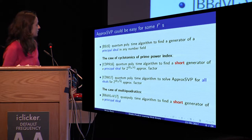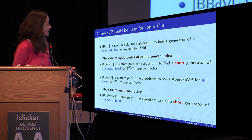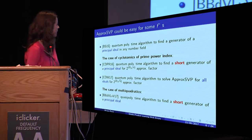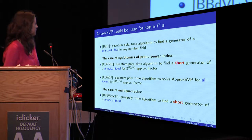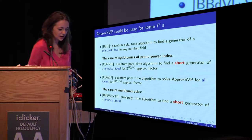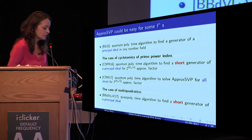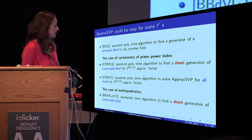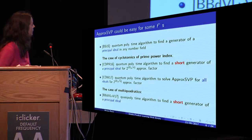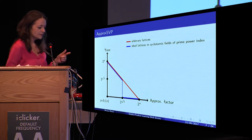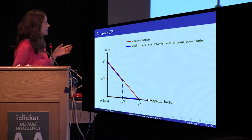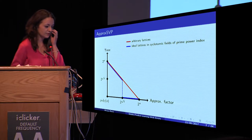Later on, they showed that we can solve approximate SVP for all ideals, not necessarily principal, up to the same approximation factor. And some progress has been done for the case of multi-quadratics. Bernstein and his co-authors showed that we can find a short generator of a principal ideal in a multi-quadratic number field. So here you can see a comparison between the hardness of approximate SVP for arbitrary lattices and for ideal lattices in cyclotomic fields of prime power index.